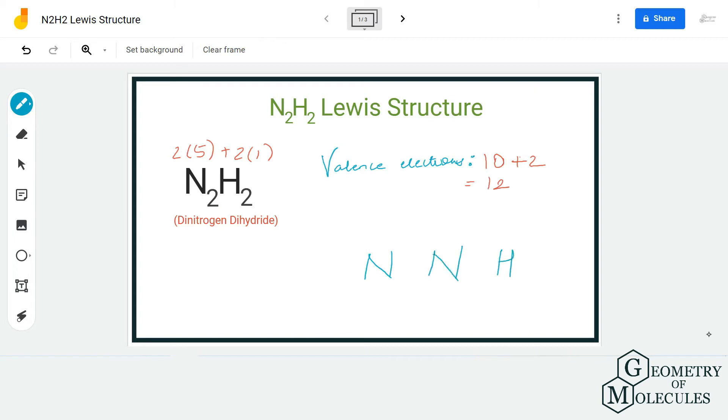Once you have done that, place a pair of electrons between nitrogen and hydrogen atoms and both nitrogen atoms to show a bond. So here we are placing a pair of electrons between both these nitrogen and hydrogen atoms. Doing that, we will have a stable structure for hydrogen atom.